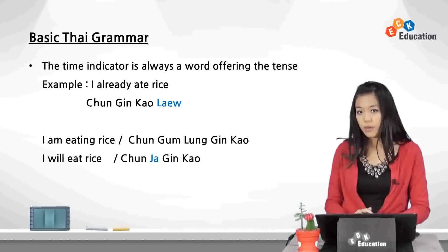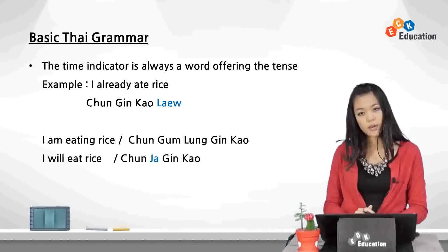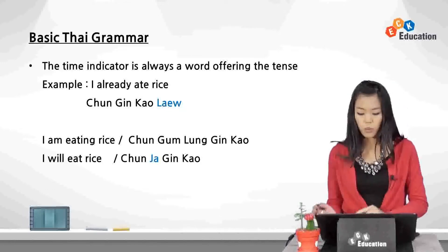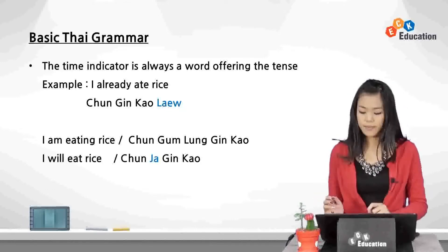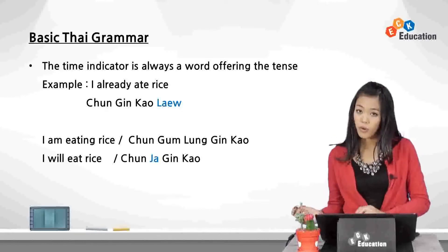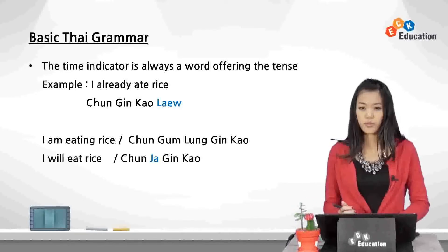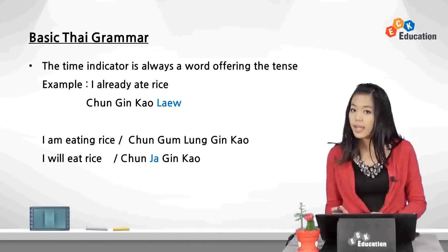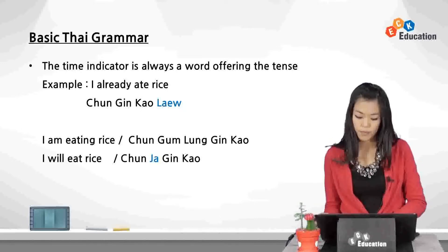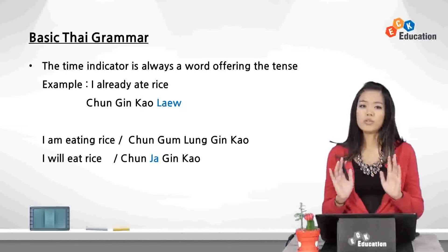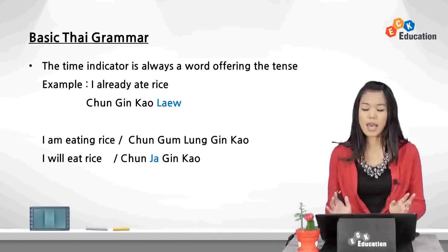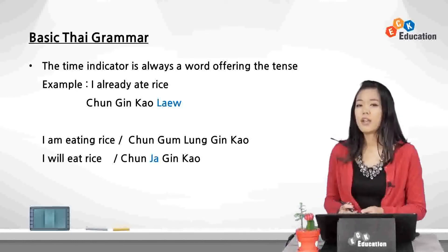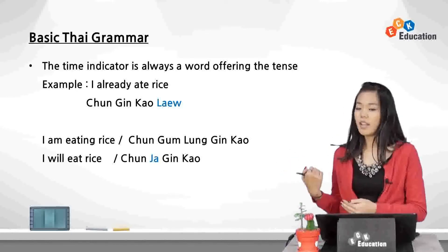And the last example: 'I will eat rice' — chan ja gin kao. This is future tense. To make a sentence future tense, we need the word ja, and this word is put before the verb to indicate the future. Just like here, ja is put before gin, which means 'to eat.' Don't worry about it now because I will go through the tenses again in later chapters.